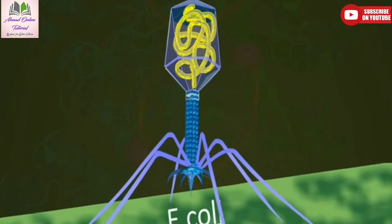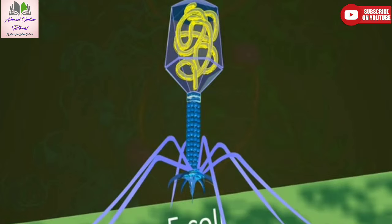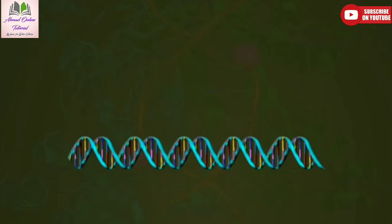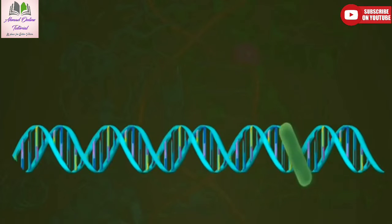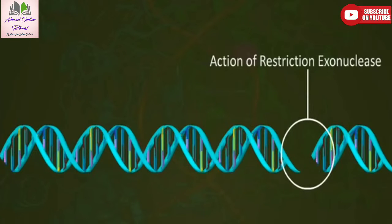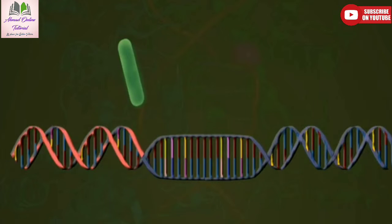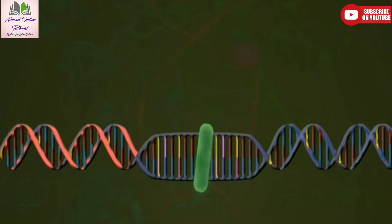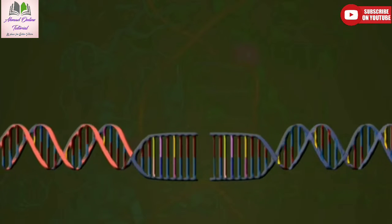The second enzyme was named as Restriction Endonuclease. Restriction Enzymes belong to a larger class of enzymes called Nucleases. They are of two types: Exonucleases that remove nucleotides from the ends of DNA, and Endonucleases that make cuts at specific positions within DNA.